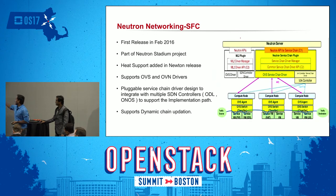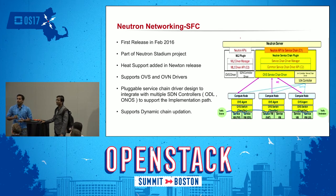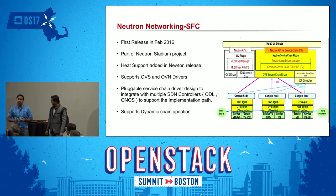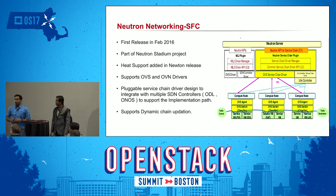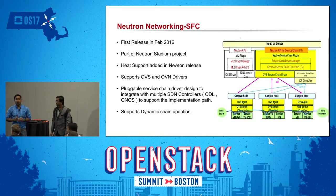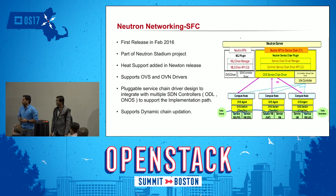In this architecture, all the SFC building blocks are highlighted in blue blocks. At the Neutron server, we have drivers, extensions, and plugins being defined. At the bottom level, we have a compute node with OVS and OVS agent. This OVS agent will directly speak with the SFC driver and help us to download SFC flows. We had a first release in February 2016. We are part of the Neutron Stadium project, and Heat support was added in the Neutron OpenStack release. We also have a pluggable service function chain driver architecture, so we can plug in any SDN controller and create an SFC data path. We also support dynamic service function chain creation and deletion.